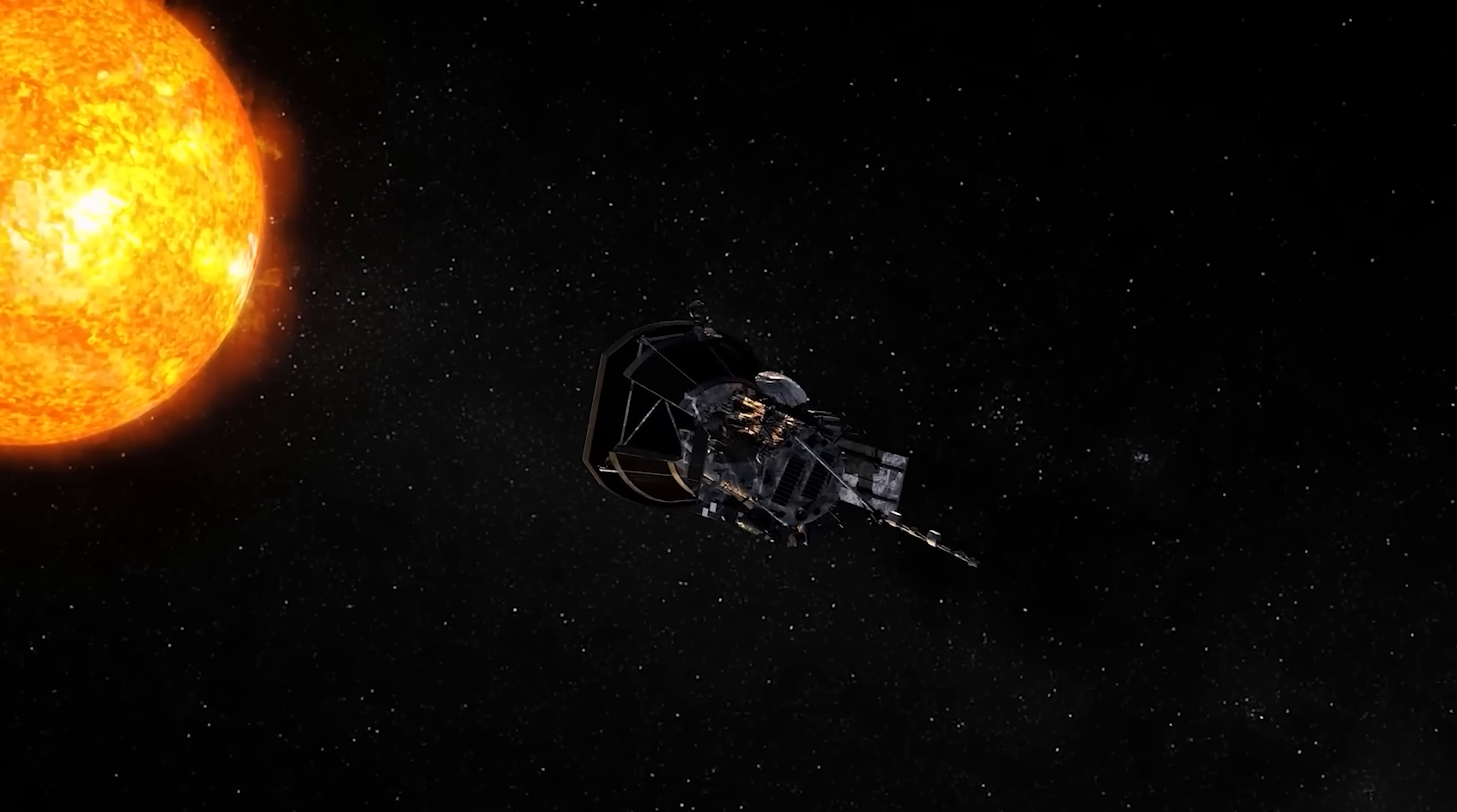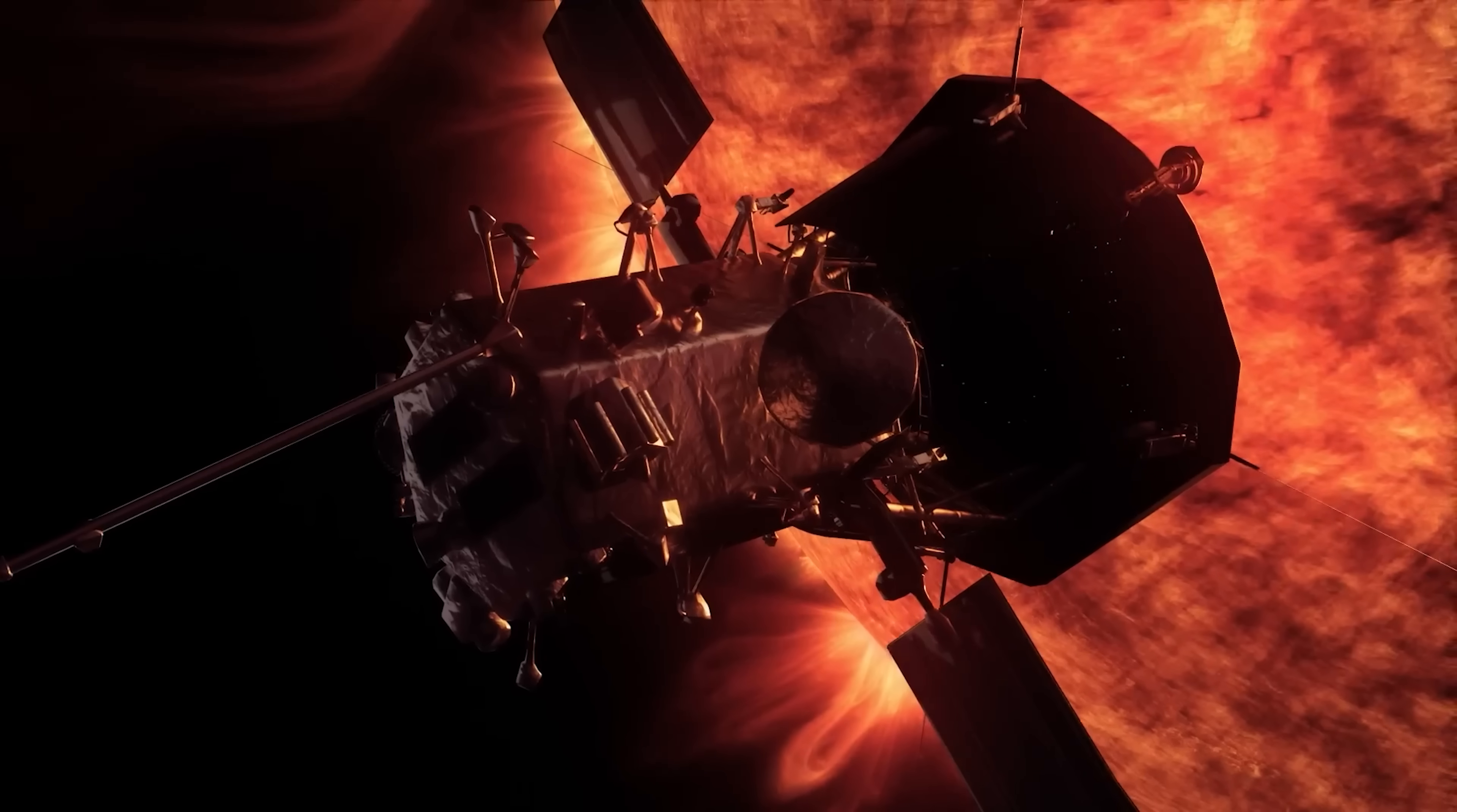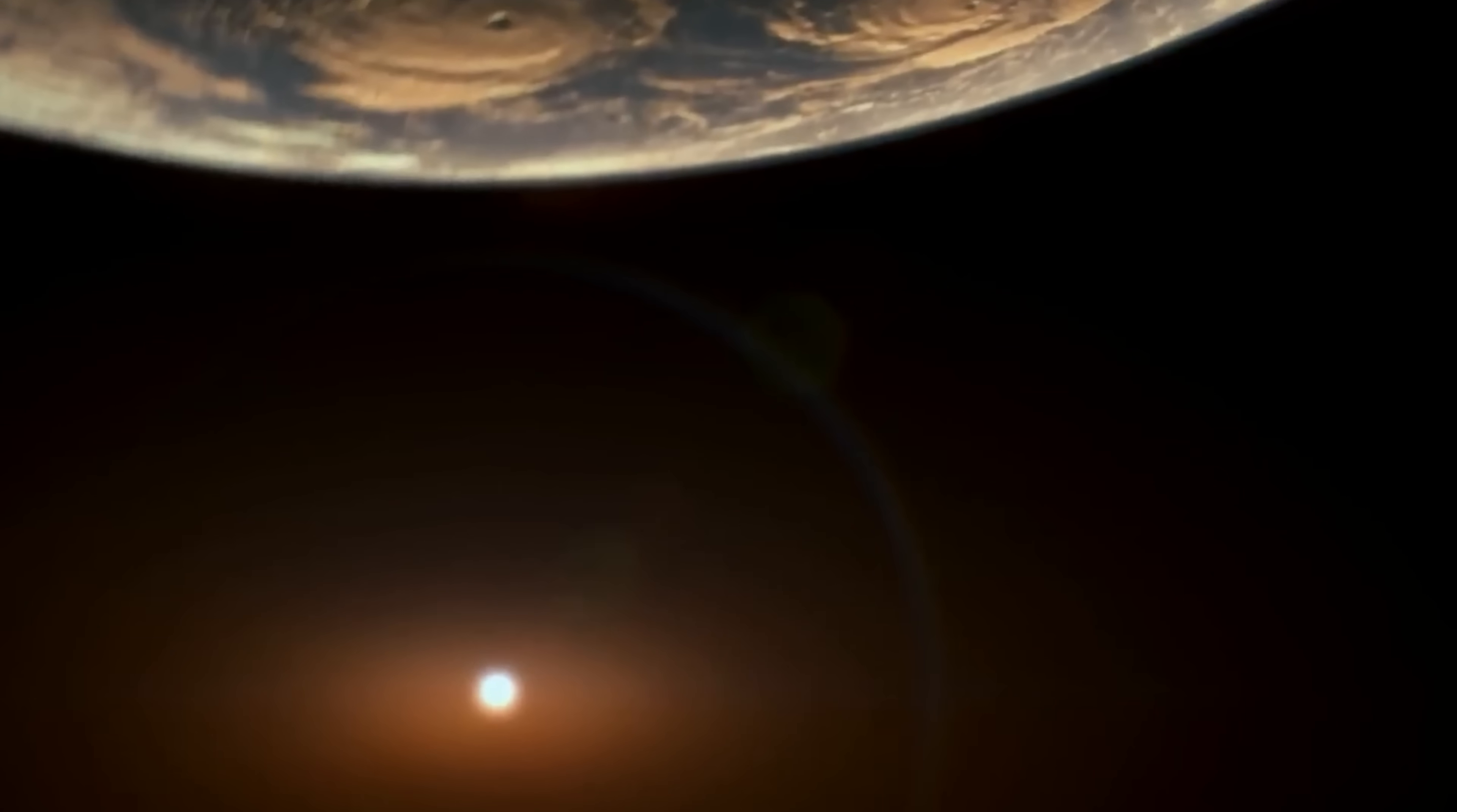That's where the Parker Solar Probe comes in. By flying into the corona and directly sampling the solar wind, Parker is helping us figure out what triggers these solar storms, how they travel, and most importantly, how to predict them. It's like building an early warning system for space weather. One day, thanks to Parker, we might be able to alert airlines, power companies, and satellite operators before the Sun decides to throw a tantrum.